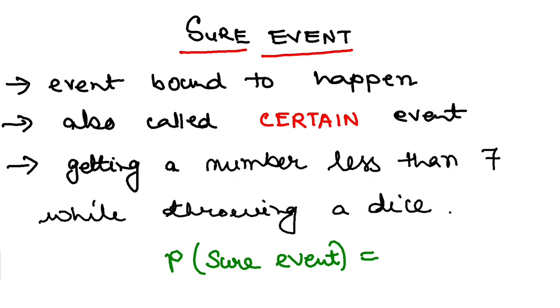In this video, we shall be discussing two important types of events. One is a sure event. As the name suggests, it is an event that is bound to happen or bound to occur and is also called a certain event.